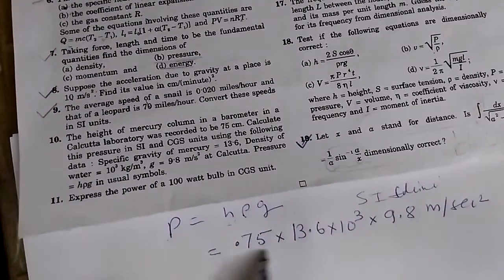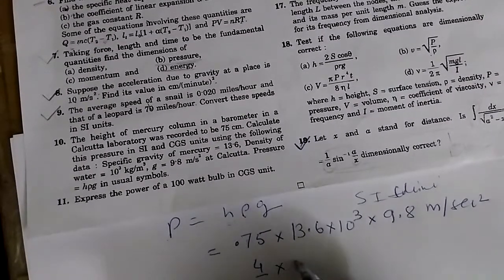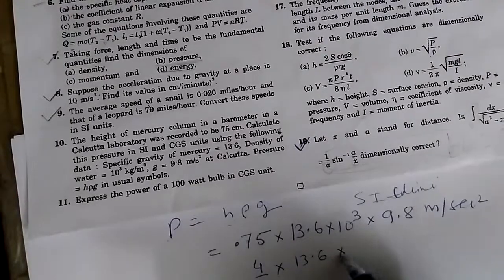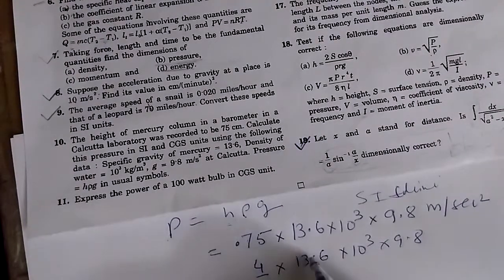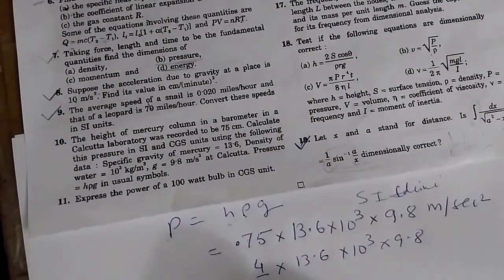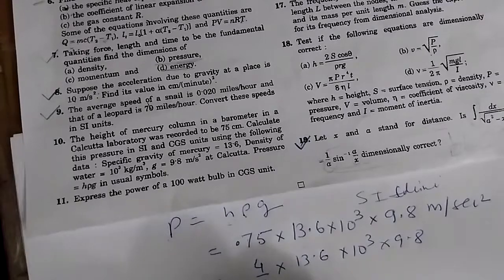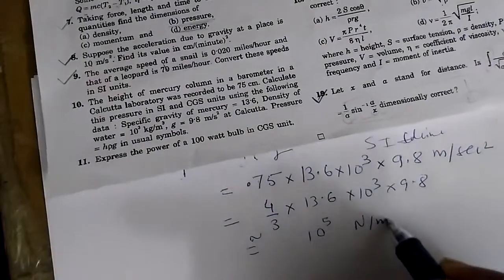If we want to simplify this, we can do, let us say, let us do a little bit of, this is 4 by 3, multiplied by 13.6, into 10 to the power 3, multiplied by 9.8. So, after some simplification, we should get something very close to 10 to the power of 5 Newton per meter square.